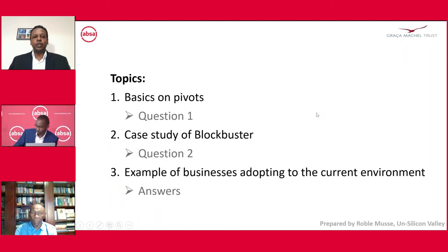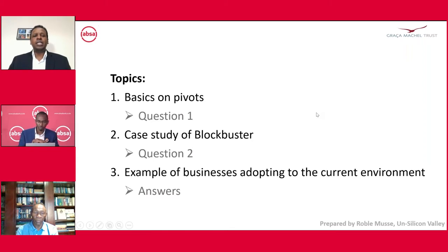The three main areas I'll be covering today are the basics on pivots, then a case study of a company called Blockbuster and how it failed to adjust to market changes, and then an example of businesses adapting to the current environment. I'll be asking two questions — if you know the answer, put your response in the messaging. At the end of my presentation, the people who get the question right first will get a free book, or the administrators will pick somebody randomly.